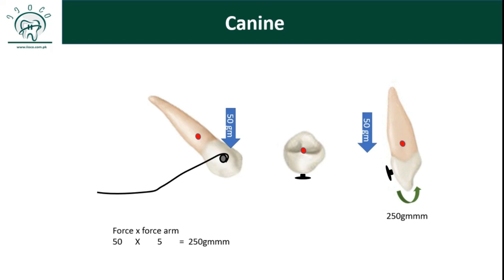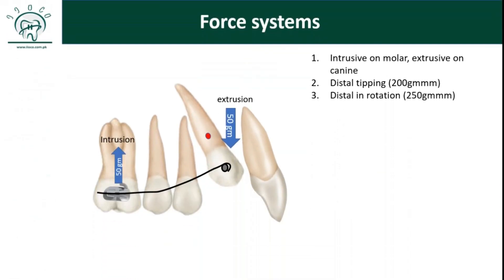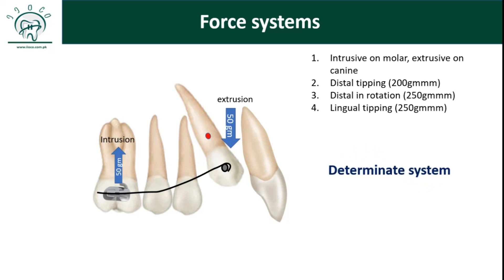In this force system you were able to calculate the moments easily. That is why the one couple system is also known as a determinate system — meaning you can calculate the response of the tooth and the moments very easily, which is not as straightforward with the two couple system, which we will discuss later. Till then, have a good day.